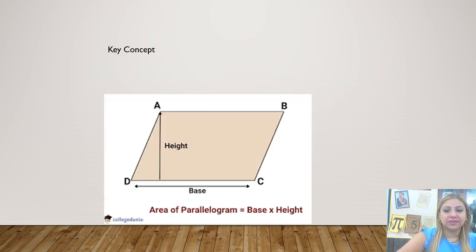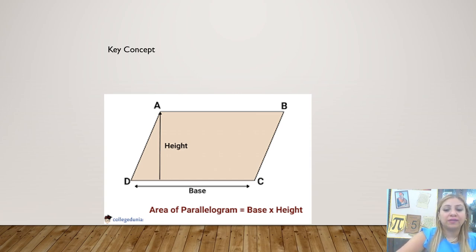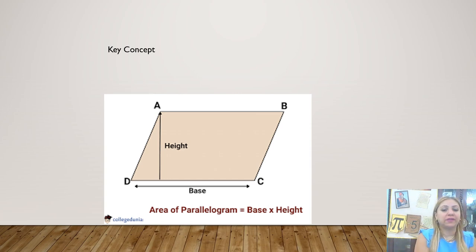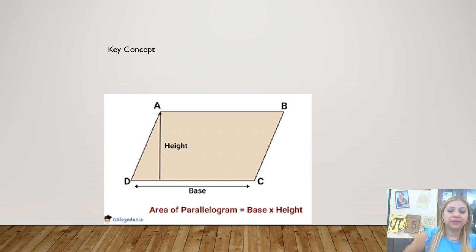This is the key concept. This is an example. As you see, this is a parallelogram that has two pairs of parallel sides, as we said before. So if you want to find the area of the parallelogram, just multiply the base by the height.